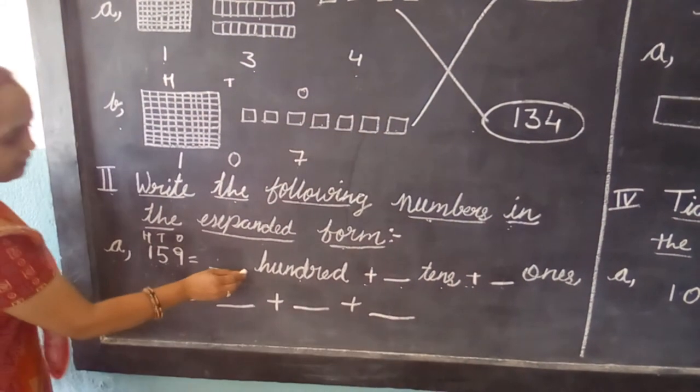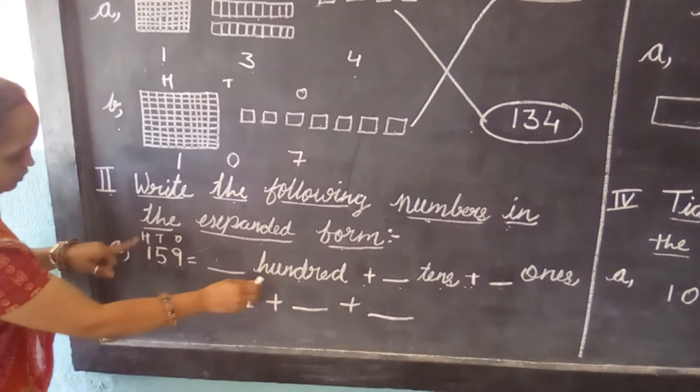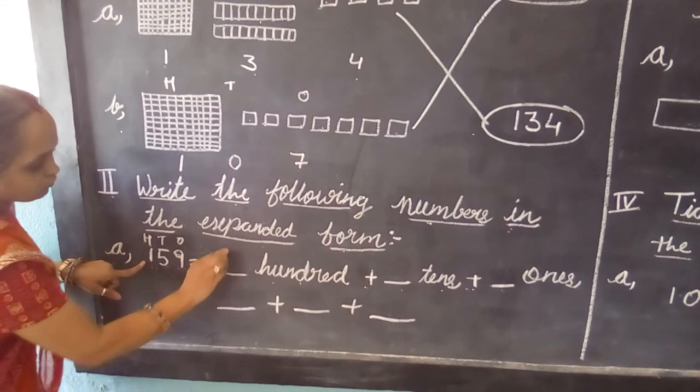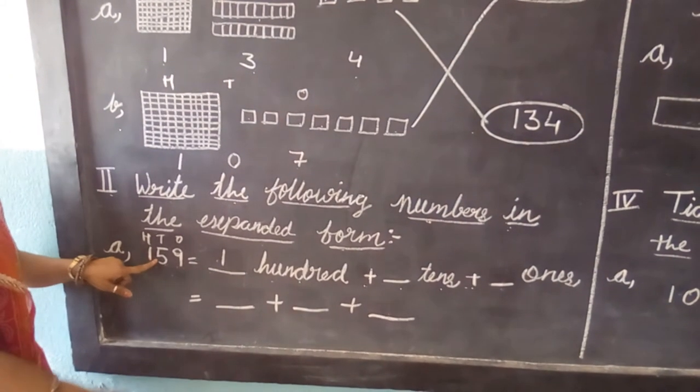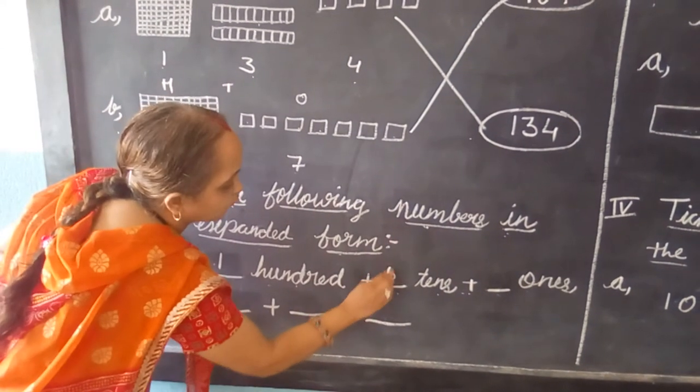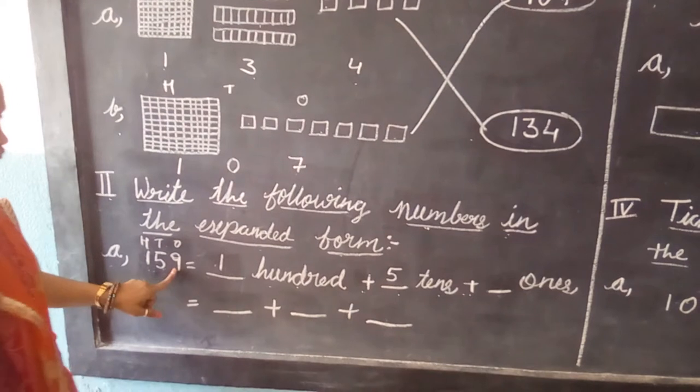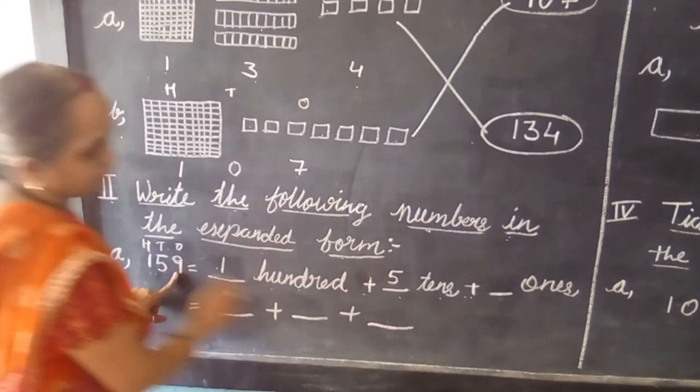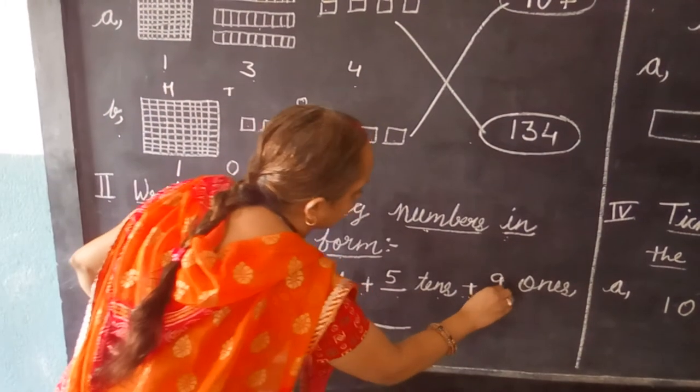So here at that place where we have to write, what is at the 100 place? 1. So we have to write 1. At 10 place, the number given is 5, so we have to write 5. And at 1 place, the number is 9, so we are going to write here 9.